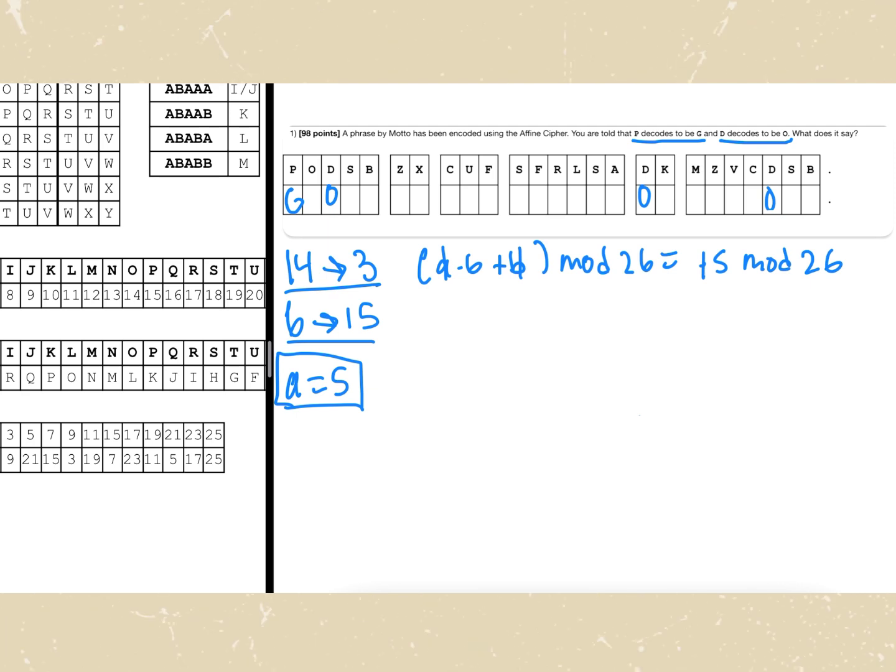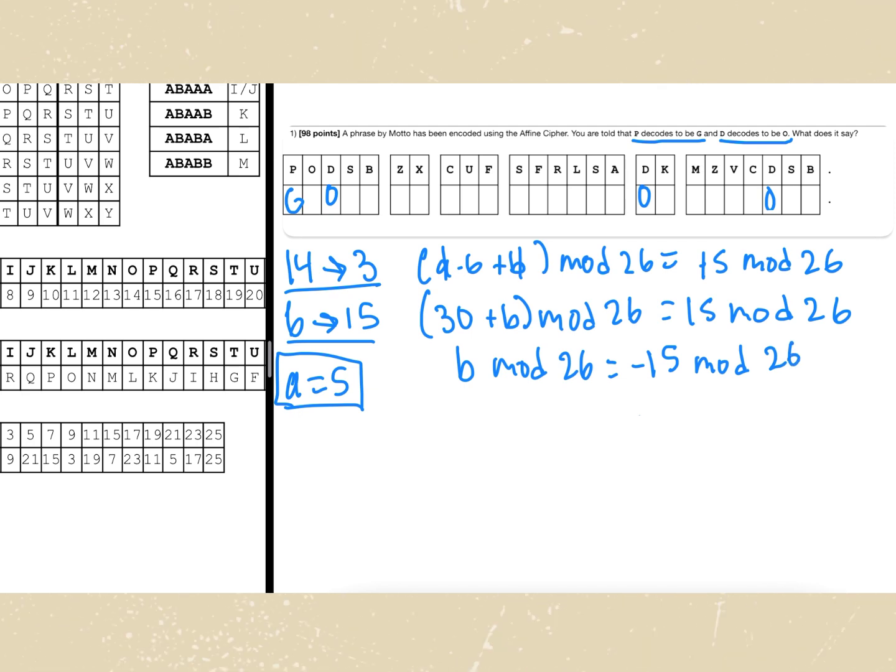Now we're going to plug in our 5 right back into the equation. So 5 times 6 equals 30 plus b mod 26 is equal to 15 mod 26. Now since we are solving for our b value we want to isolate the variable, meaning that we will be subtracting 30 from both sides. So this is going to leave us with b mod 26 is equal to negative 15 mod 26. So we're going to run the modulus of 26 onto that negative 15 giving us 11. This means our b value is going to equal 11.